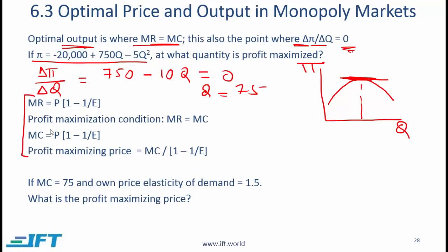Something else to learn: here is an expression for marginal revenue. Marginal revenue equals price multiplied by 1 minus 1 over e, where e stands for the own price elasticity of demand. Don't worry about the derivation of this formula — just remember that marginal revenue equals price times (1 minus 1 over e). This is pointed out in the curriculum in the segment on perfect competition, and there is a practice problem at the end where this relationship is needed.